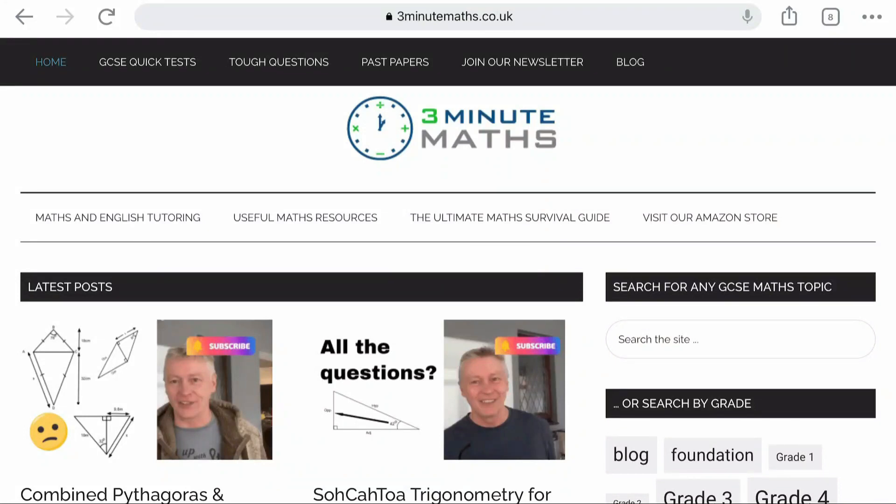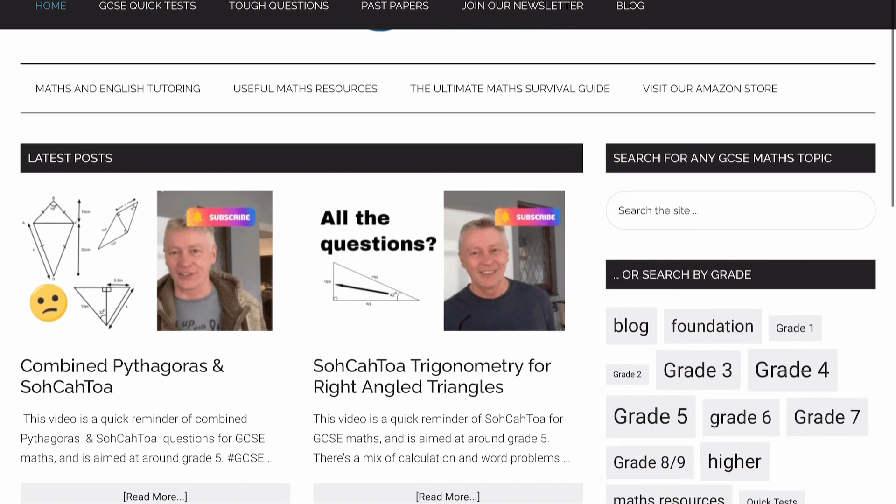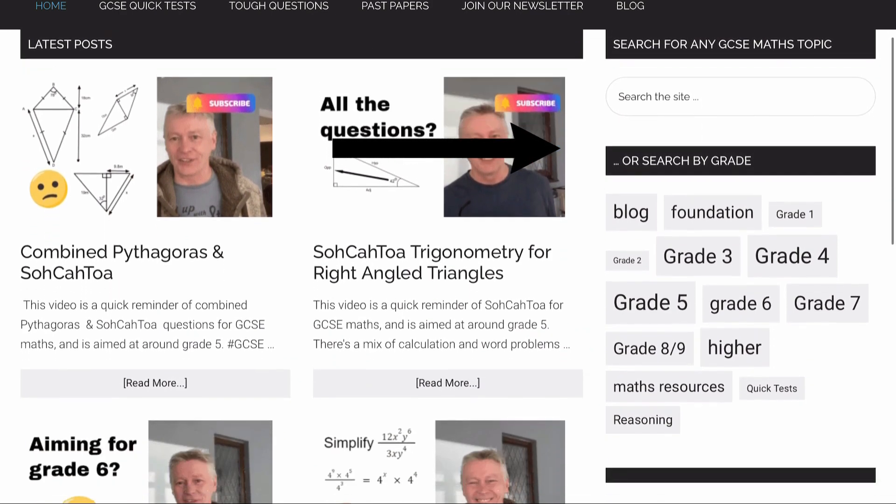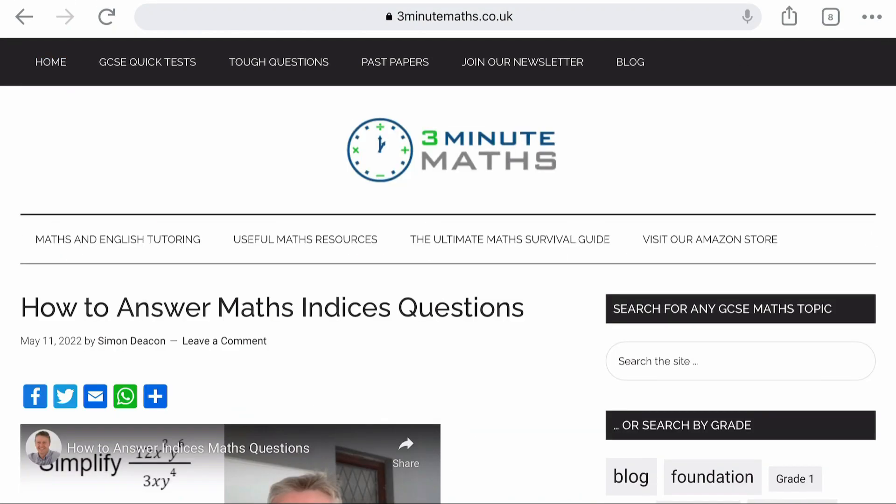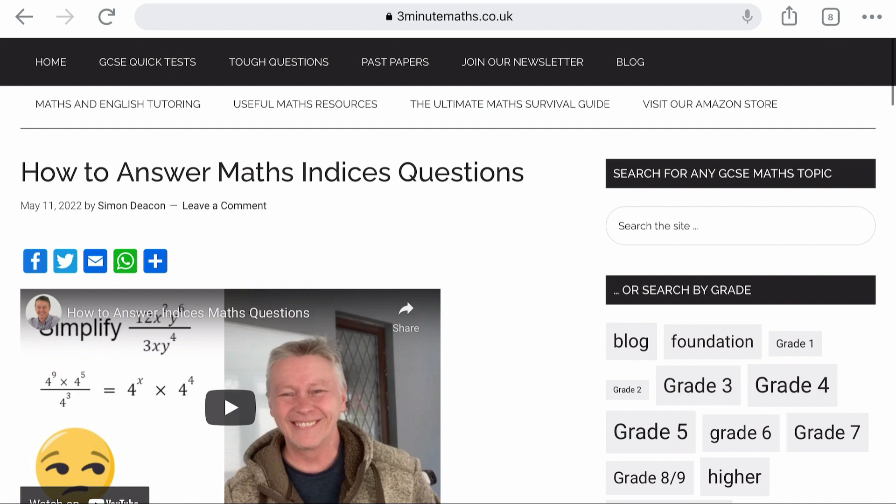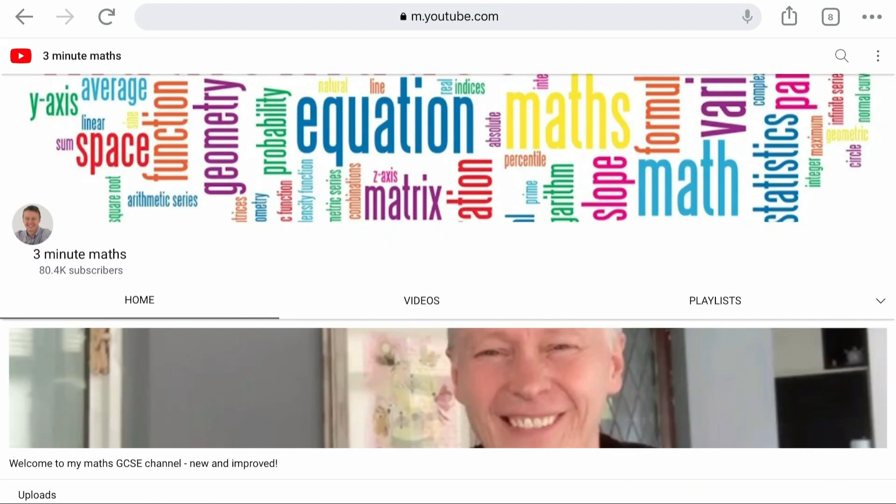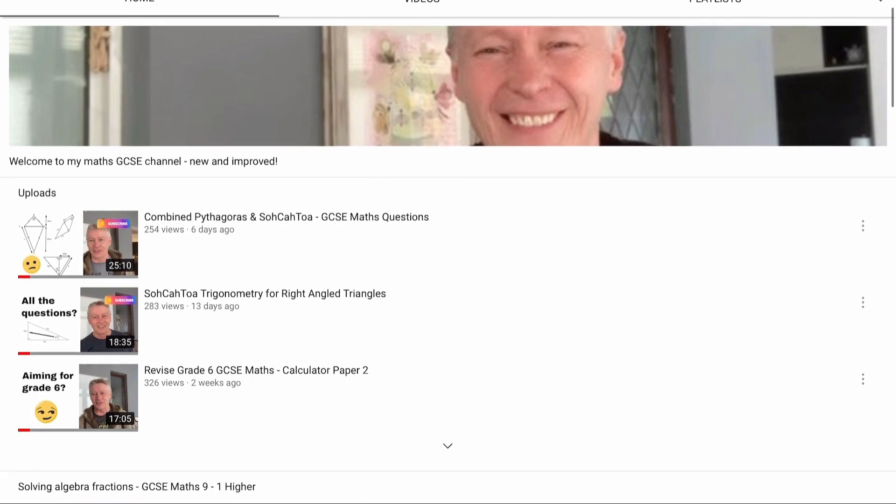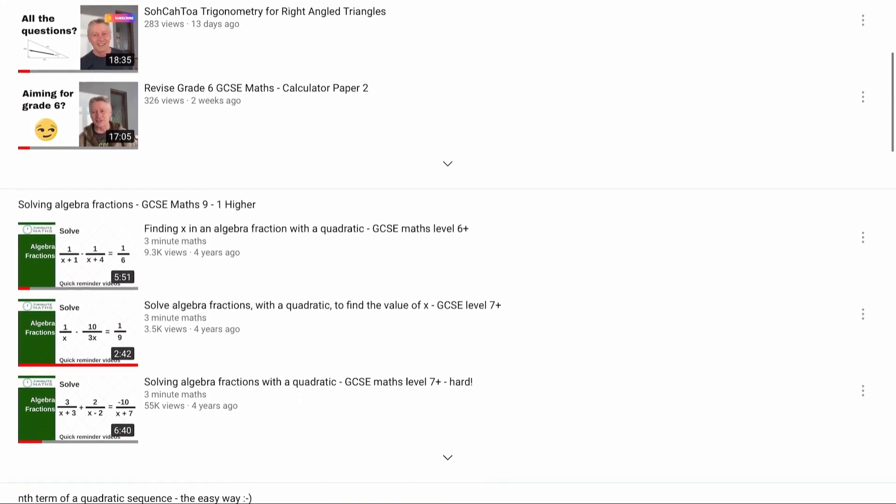So just a quick note before we continue. If you require any additional support, please visit 3minutemaths.co.uk. You can search for any GCSE maths topic or search by grade. And if you click on any of the links, that will take you through to a particular post. So this one is how to answer maths indices questions. There are links through to the questions, the answers, and a walkthrough video as well. You can also remain on the YouTube channel, and all of the resources are within the YouTube channel and descriptions below each of the videos.